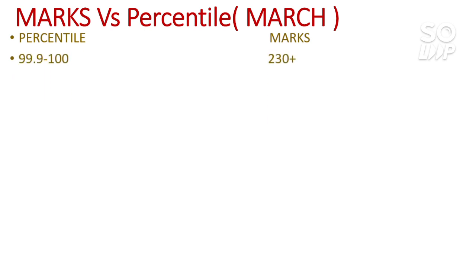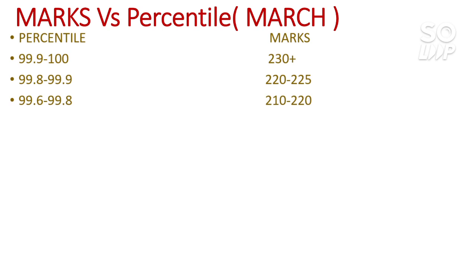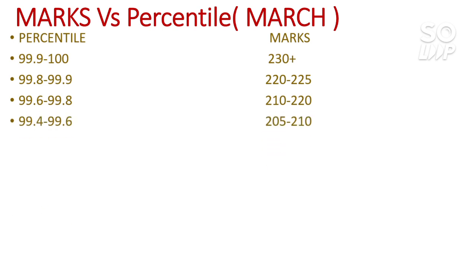Here is the percentile versus marks table. For 99.9 to 100 percentile, you can expect 230 plus marks. For 99.8 to 99.9 percentile, you need around 220 to 225 marks. This may vary by 5 to 10 marks depending on the difficulty level of your shift, since there will be six shifts with different difficulty levels.